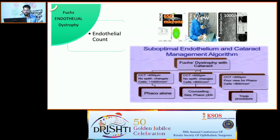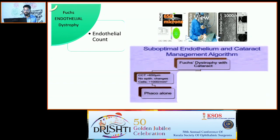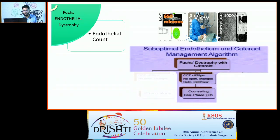In Fuchs endothelial dystrophy, if corneal thickness is less than 650 microns with a good endothelial count, phacoemulsification alone can be performed, but the patient must be counseled that endothelial keratoplasty may be needed later. If thickness is less than 650 microns with a cell count below 800, the counseling level escalates — the patient may need keratoplasty very soon.